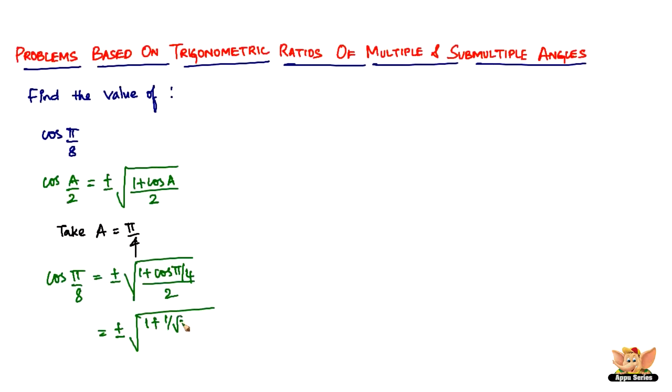which is 1/√2 divided by 2. Solving this, we get cos π/8 equals plus or minus square root of (√2 + 1)/(2√2). That is the value of cos π/8.